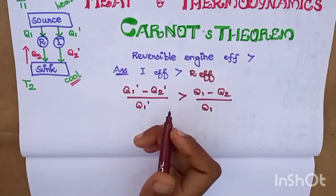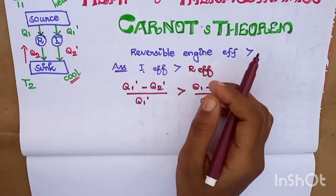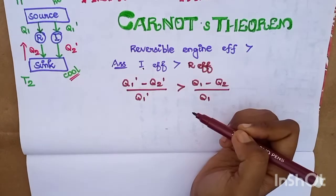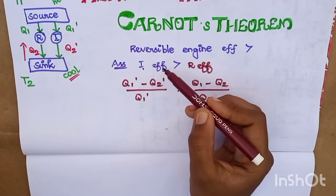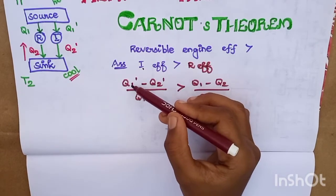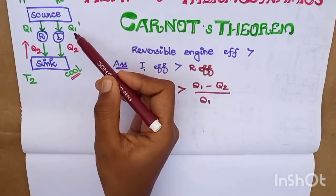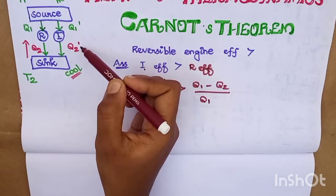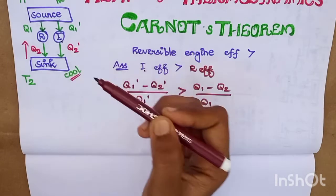So, the irreversible engine efficiency is greater than the reversible engine efficiency. This tells us that Q1' minus Q1 and Q2' are at the same value. The work done by the irreversible engine is greater than that of the reversible engine.